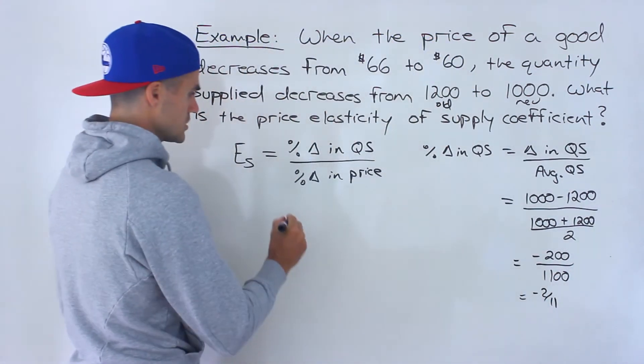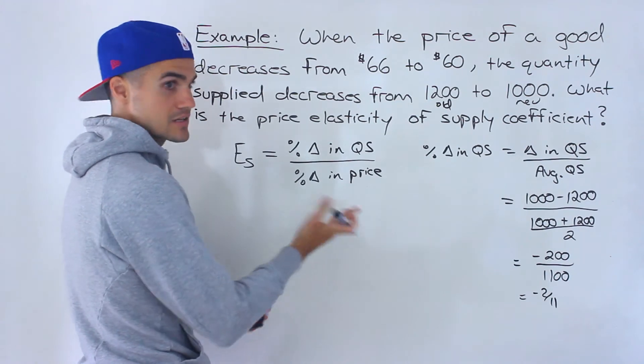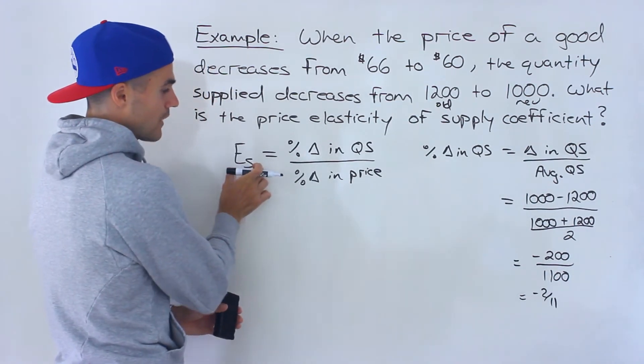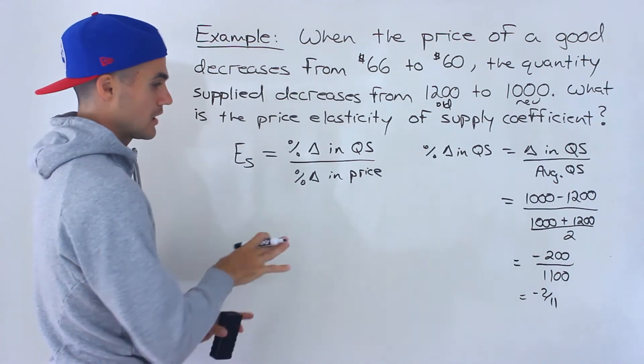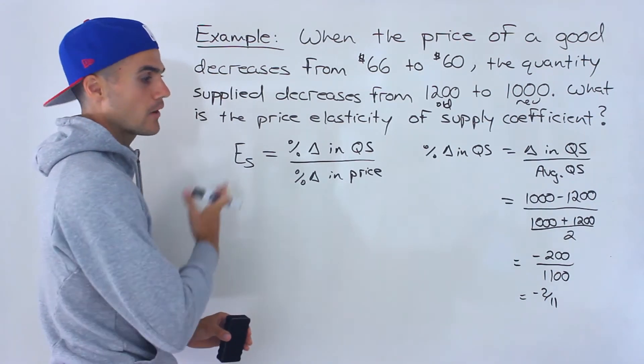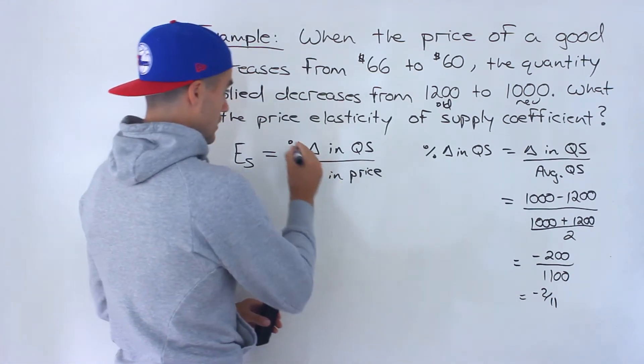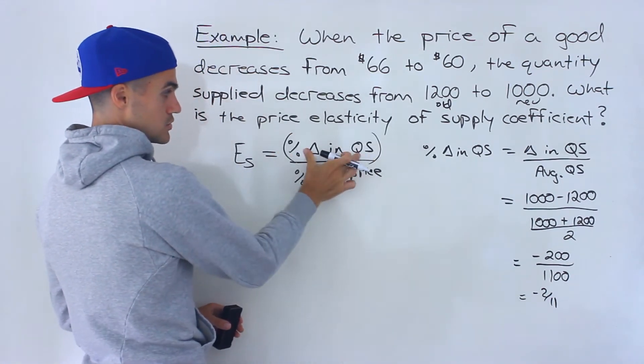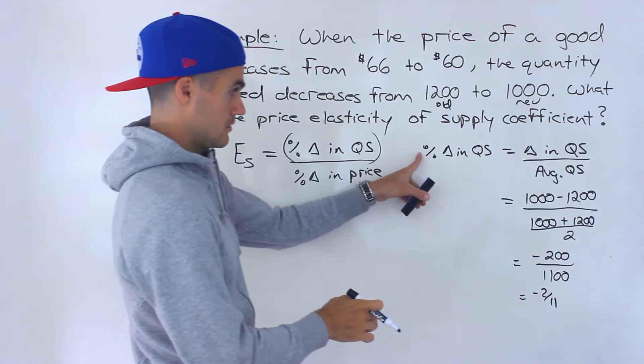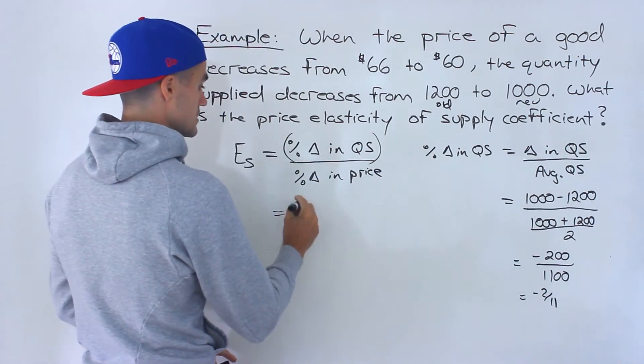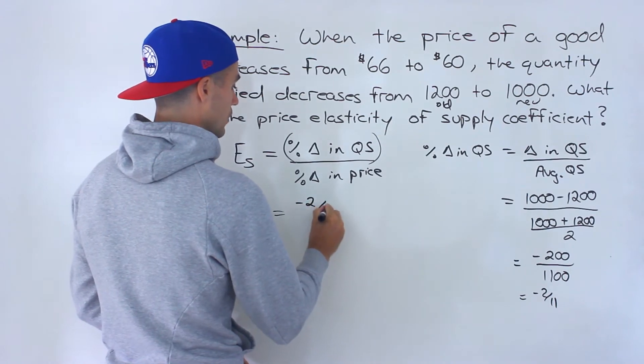I'm actually going to leave this in fractions just in case maybe this is a multiple choice question on a test. This can be given in fractions. Usually it's going to be in decimals, but I'm going to leave that as a fraction and I'll also give the decimal value at the end. So this numerator ends up being negative 2 over 11.